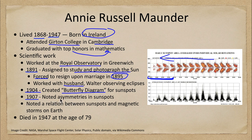In 1907 she noted asymmetries in the sunspots and also found a relation between sunspots and magnetic storms here on Earth. She really worked consistently on the sun throughout her career, both independently and with her husband, and she died in 1947 at the age of 79.